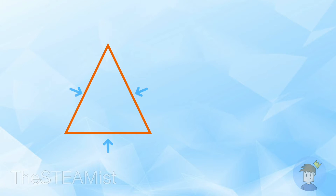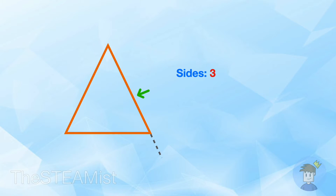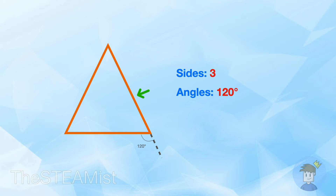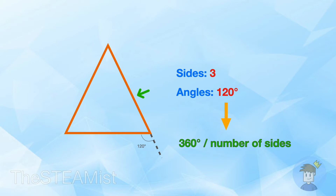An equilateral triangle has 3 sides with the same length. To draw this triangle we need to draw one side and then turn 120 degrees and draw the second side, and again turn 120 degrees and draw the third side. These angles are equal to 360 degrees divided by the number of sides, which is 3.